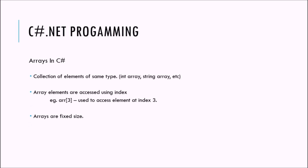Arrays are one of the most used objects in C-sharp. Whether you work with languages like C, C++, .NET, or Java, arrays are used. An array is a collection of elements of the same type. You can define an integer array where all elements are of integer type, a string array where all elements are of string type, or you can also declare an array of custom class objects.